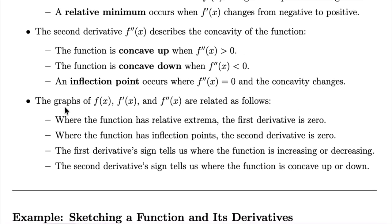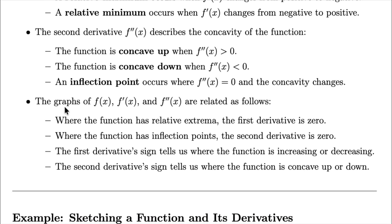Here's how the graphs are related. When the first derivative is zero, we have a critical point and a relative extrema — either a relative minimum or maximum. When the second derivative is zero, we have an inflection point. The first derivative sign tells us whether the function is increasing or decreasing, and the second derivative sign tells us whether the function is concave up or concave down.